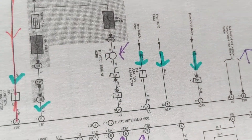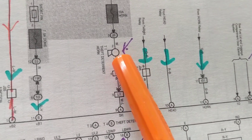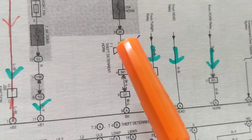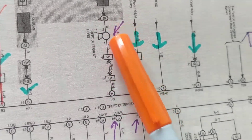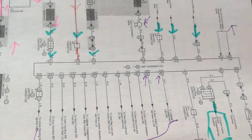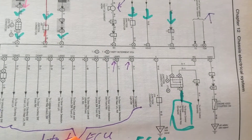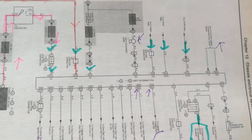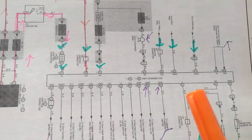There are inputs to the theft deterrent system, as drawn here, and the output is the alarm - in this case, a horn. This is the symbol for horn. If you're not sure, Toyota even tells you 'theft deterrent horn.' This horn has been sounding, telling us someone tried to do something to the car.